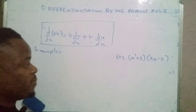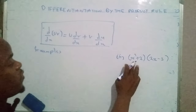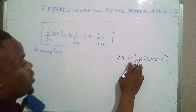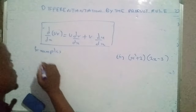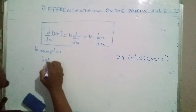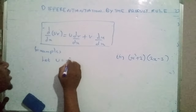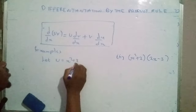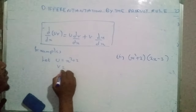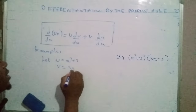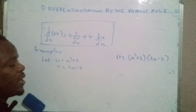Let's do example two. First of all, we let one function be u and the other one be v. So we say let u be x squared plus 2 and then v be 2x minus 3.